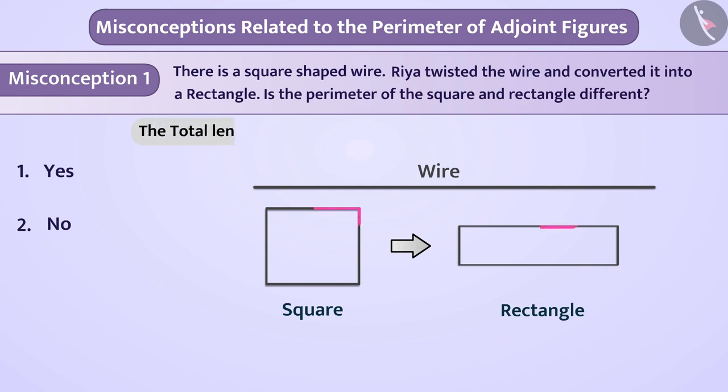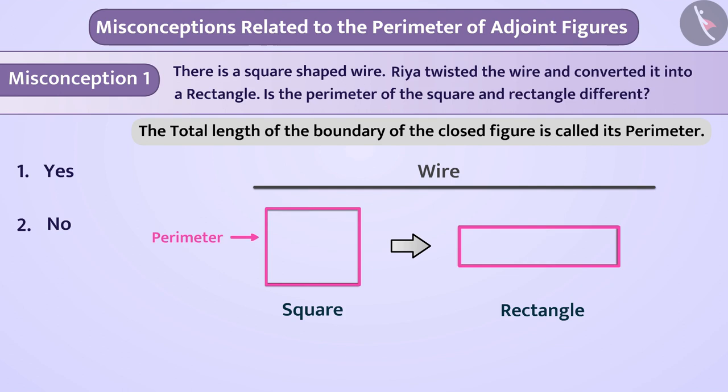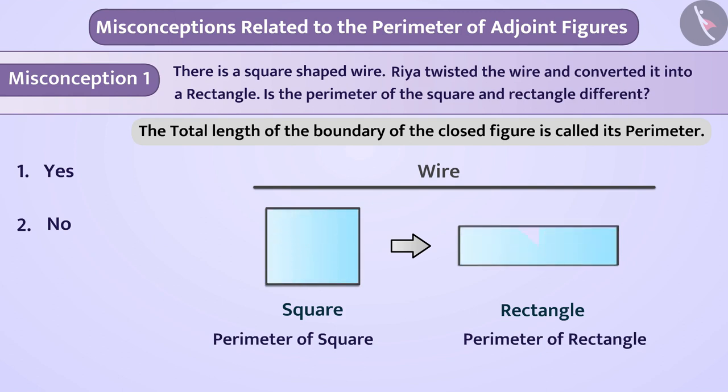The total length of the boundary of closed figure is called its perimeter. Some students think that if shape of wire is changing, therefore the perimeter will also change. Here, since the shape of the square has been converted to the shape of the rectangle, they think that the perimeter of square and the rectangle will be different. So, they give answer as option 1 which is a misconception.